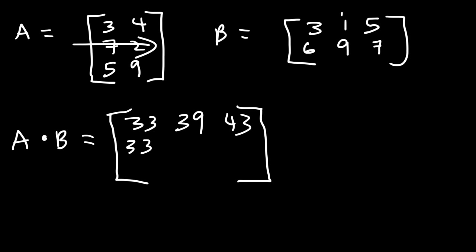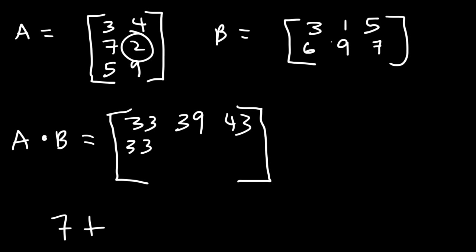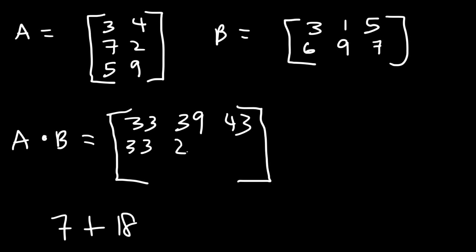Next is the second row, second column — we'll place that entry there. So we have 7 times 1 which is 7, and then 2 times 9 which is 18. Seven plus 18 is 25.